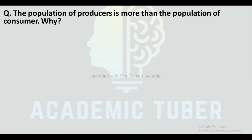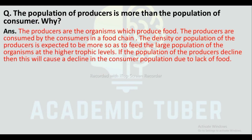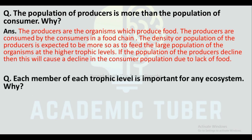Question: The population of producers is more than the population of consumers — why? Producers are organisms which produce food and are consumed by consumers in the food chain. The density or population of producers is expected to be more in order to feed the large population of organisms at higher trophic levels. If the population of producers declines, this will cause a decline in the consumer population due to lack of food.